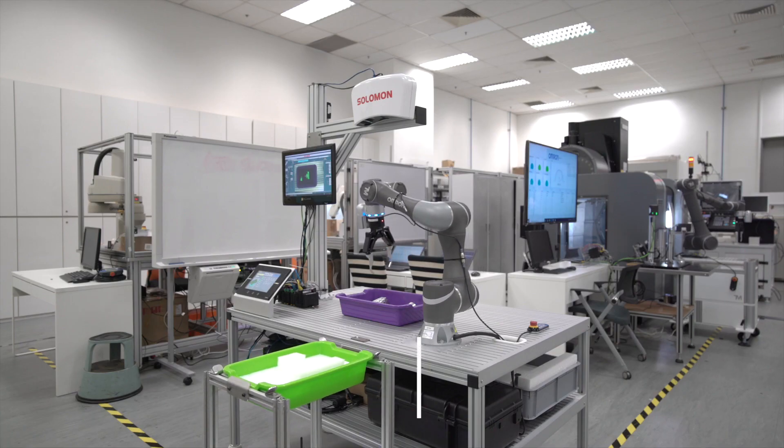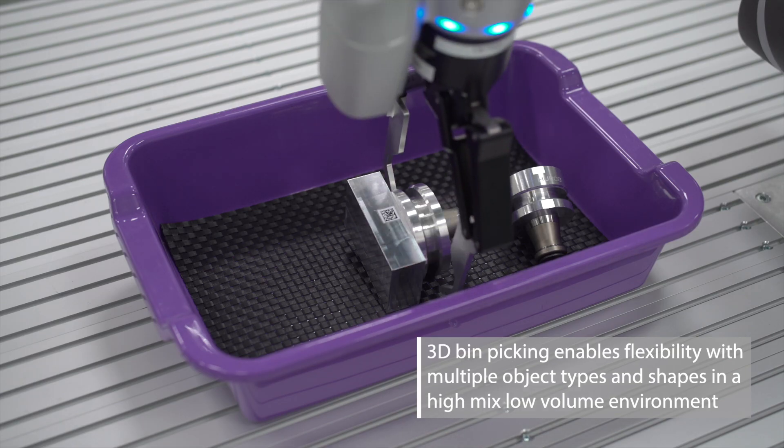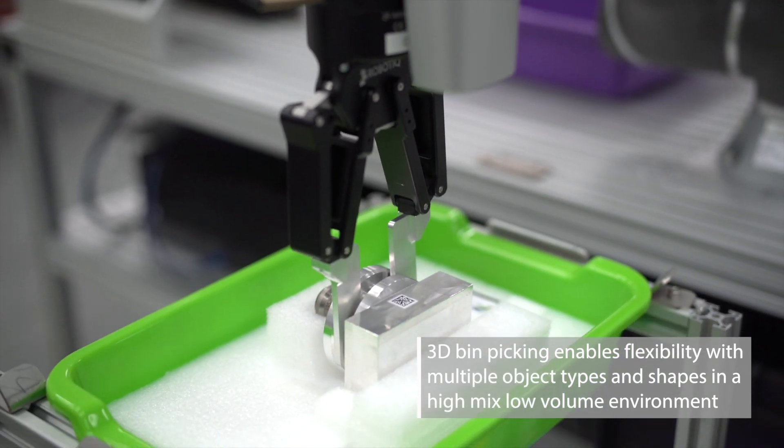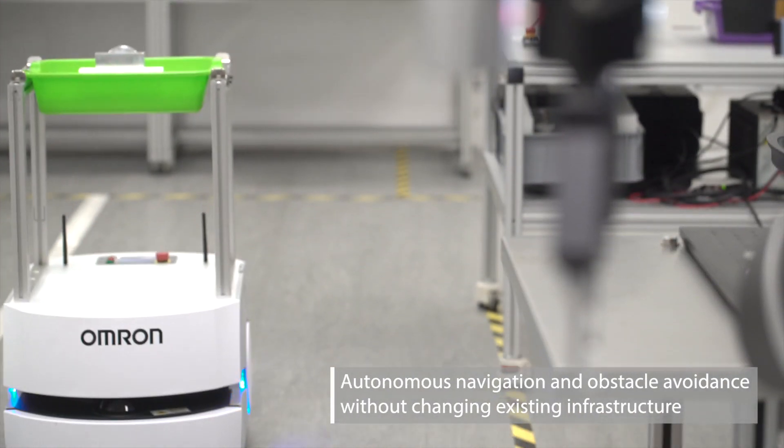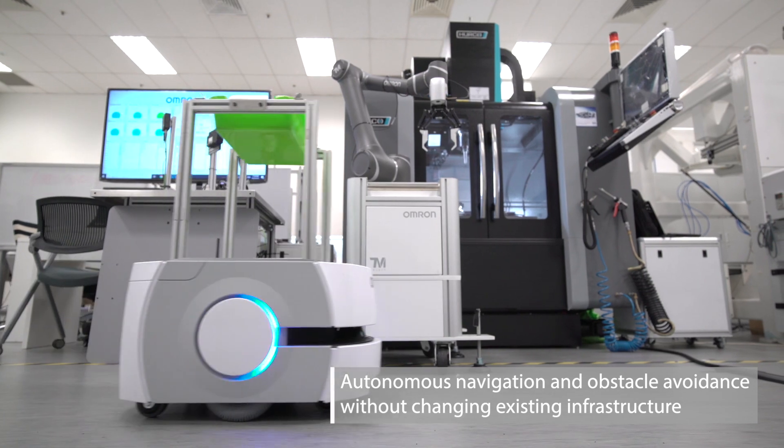Based on a trained model library, the COBOT locates and picks the correct raw material. The fleet manager then sends the AIV to the CNC station for the object's machining process.